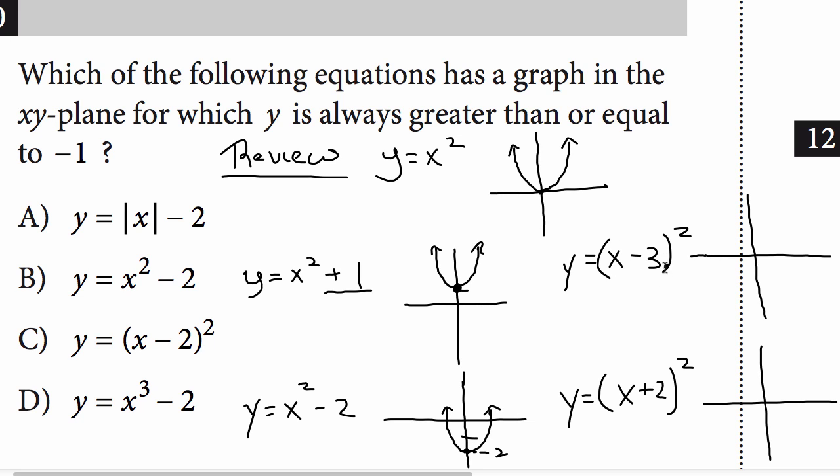What about when it's inside the parentheses? Well, it does the opposite, negative or minus 3 means go to the right 3 units. So you're going 1, 2, 3, put your point, draw your parabola, okay.